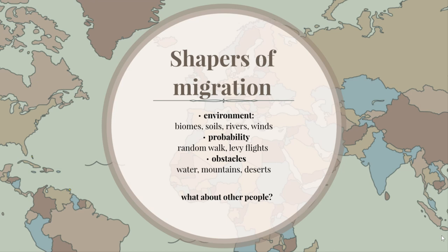There's also a lot of probability modeling: you can go in all four directions by random walk, or use Levy flights where you randomly choose but occasionally go very far. There's always the question of what is an obstacle and what is a corridor — a sea can be an obstacle for hominins but not necessarily for Polynesians or people in the Caribbean. One thing we very rarely address in archaeology is the role of other people: to what extent are they corridors or barriers to dispersal?